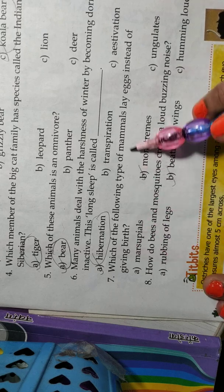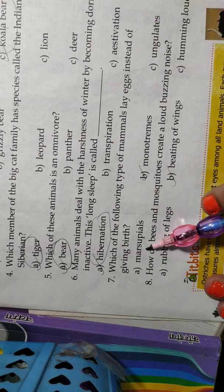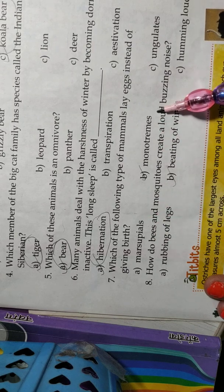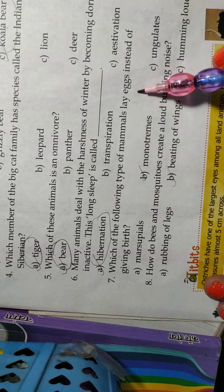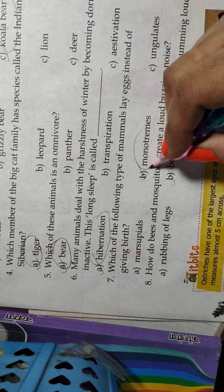Which of the following type of mammals lay eggs instead of giving birth? Marsupials, monotremes, ungulates. This is the correct answer, B option.